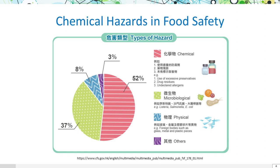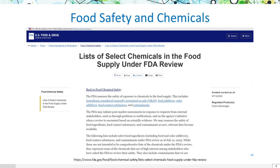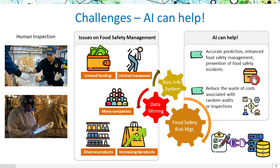Chemical hazards represent a significant portion of food safety issues. Examples include the excessive application of preservatives, drug residues, and the presence of undeclared allergens. The FDA has evaluated the safety of chemical exposure within our food supply, encompassing ingredients deemed generally recognized as safe, along with food additives and contaminants. This highlights the urgent need for effective methods to detect illicit food factories based on their use of chemicals.